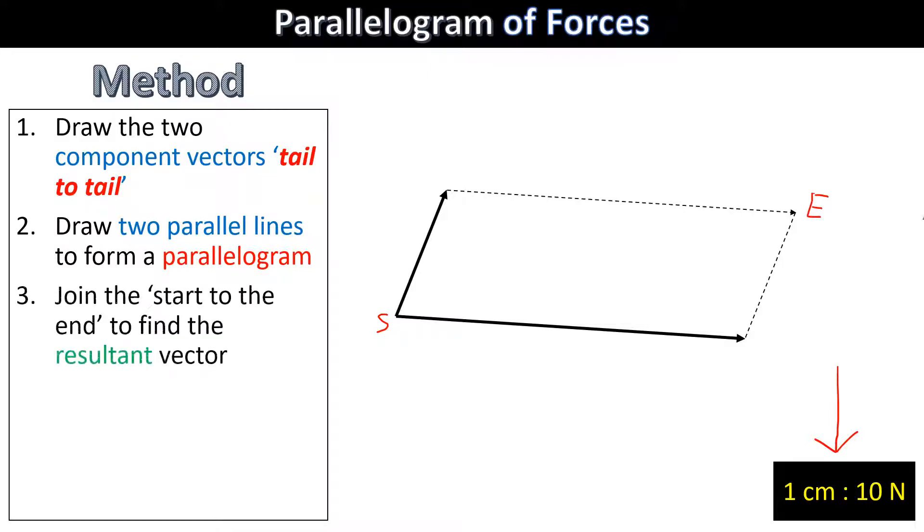We then join the start to the end to find the resultant vector, which is going to look like this. This vector here is our resultant vector by joining vector one and vector two.